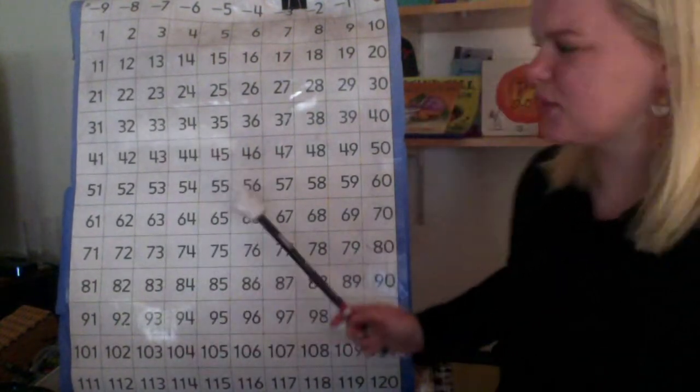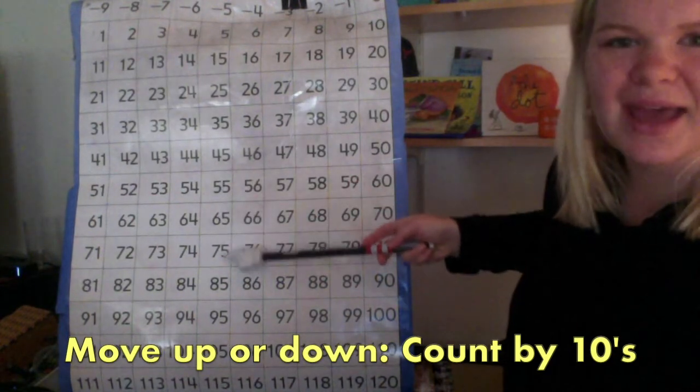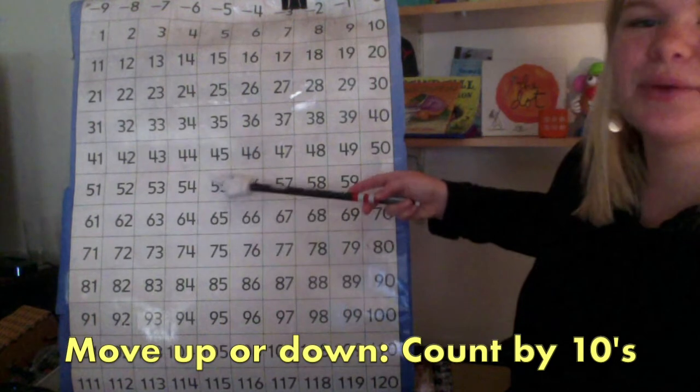We also know that when we move down the number grid, we count up by 10. Or, if we are subtracting, we count back by 10.